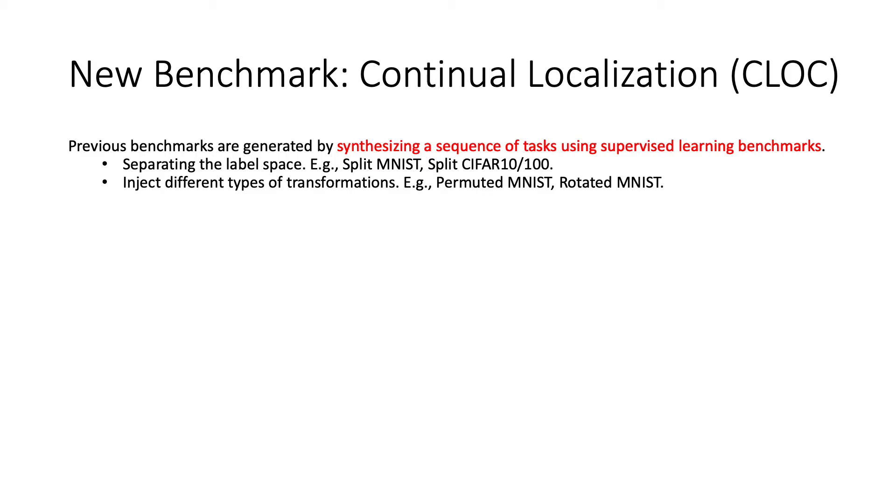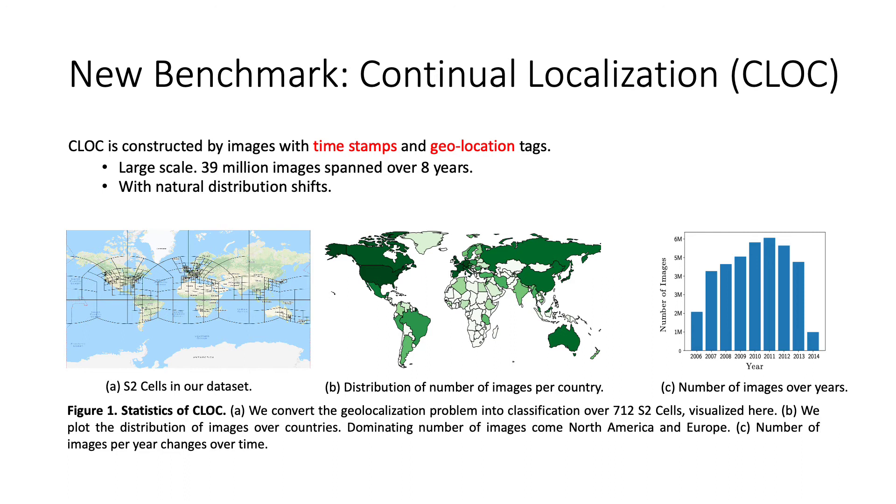Previous benchmarks for continual learning are mostly generated by synthesizing a sequence of tasks using supervised learning benchmarks. In this work, we propose a new benchmark called continual localization or CLOCK for abbreviation. CLOCK is constructed using images with timestamps and geolocations. The data stream of CLOCK is generated by ordering images according to their timestamps. Compared to previous benchmarks, CLOCK has a much larger scale. It contains 39 million images spanned over 8 years. And the distribution shift of CLOCK is naturally embedded in the change of time.